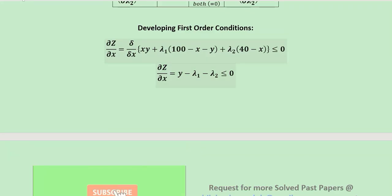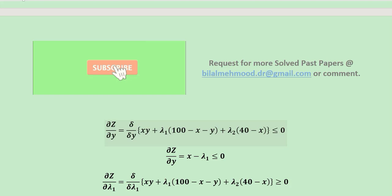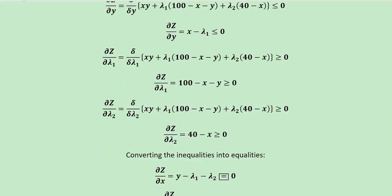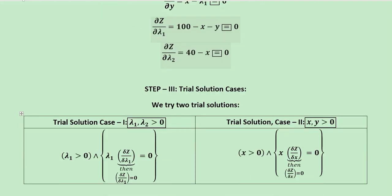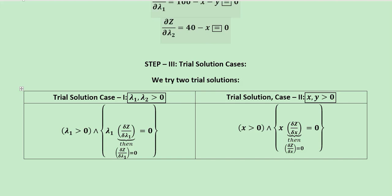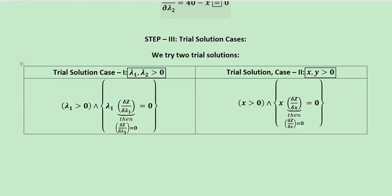This is the fourth inequality, and this is the first inequality. After having these four inequalities, they can be converted into equalities by replacing the inequality signs with equal signs. Once we do this we get four first-order conditions. Here we can say that we have fulfilled the requirement of the question. For comprehensive knowledge you can also refer to videos on this channel for the detailed description of these steps.